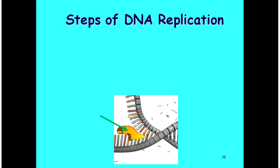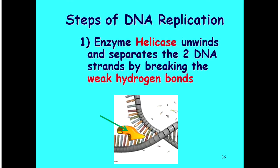Now we're actually going to get into the steps of DNA replication. Under number 39, you've got four steps. In step 1, we have an enzyme called helicase that unwinds our two DNA strands and separates them by breaking the hydrogen bonds between the nitrogen bases on opposite strands, unzipping the DNA double helix.